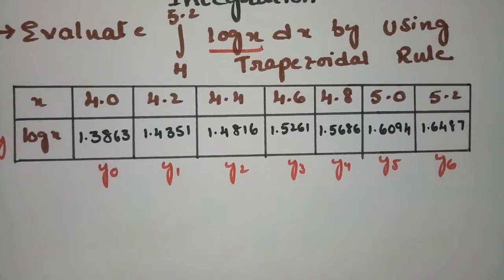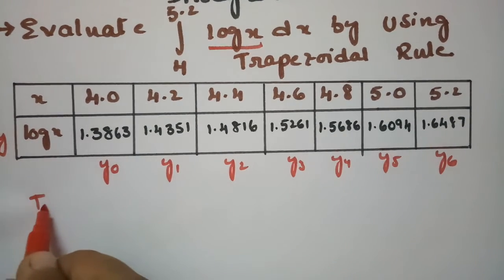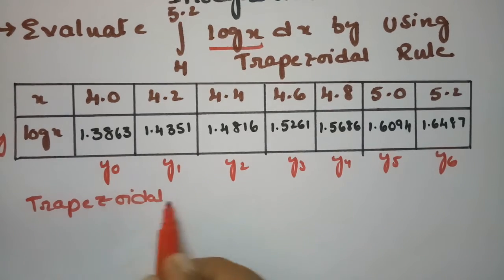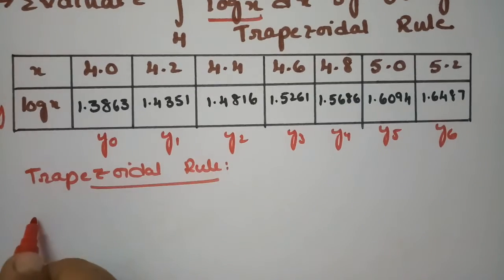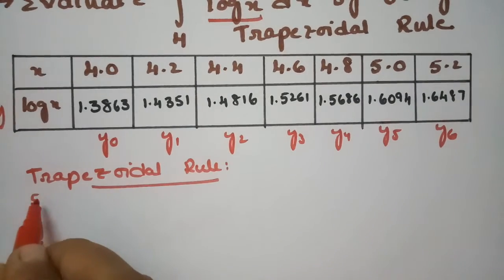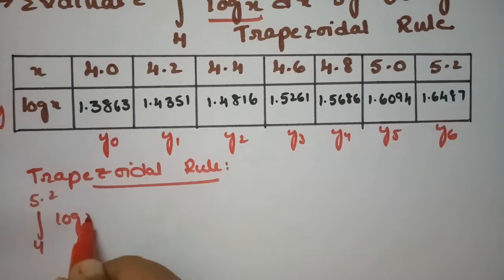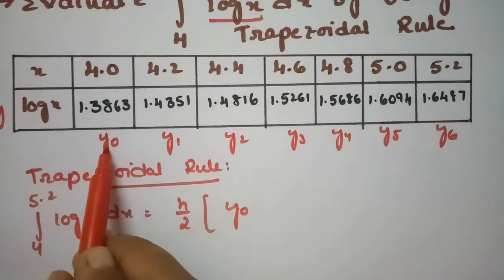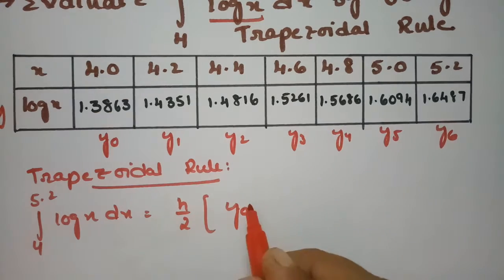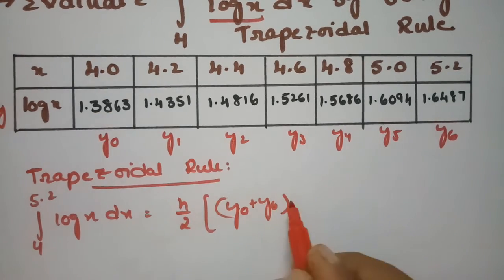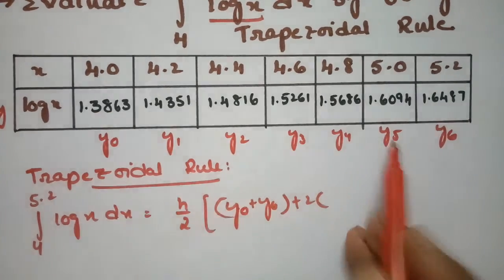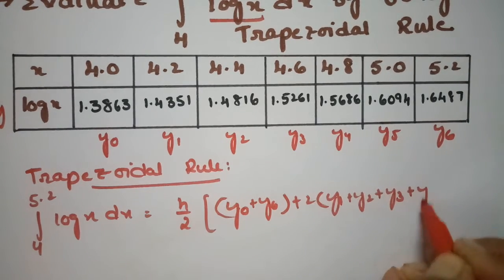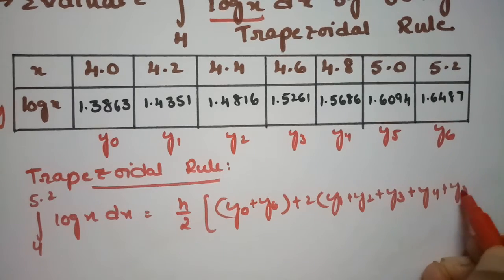So here the values are already given. According to the trapezoidal rule, we have a formula for integral 4 to 5.2 log x dx is equal to h by 2 times the initial ordinate plus the final ordinate that is y naught plus y6 plus 2 times the rest that is y1 plus y2 plus y3 plus y4 plus y5.